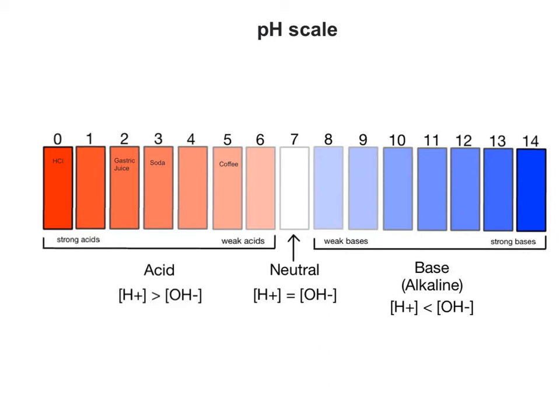A solution having a pH above 7 is a base, or basic, alkaline solution. Its concentration of hydrogen ions is less than its concentration of hydroxide ions. The higher the pH, the more basic the solution. A solution with a high concentration of hydroxide ions is a strong base.